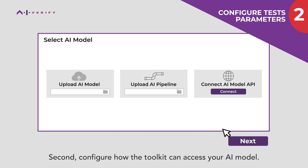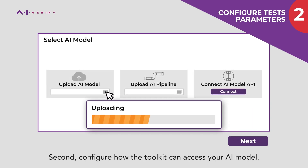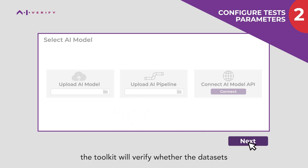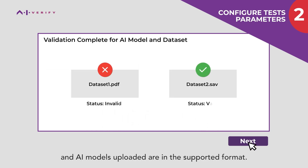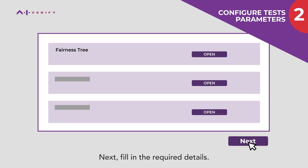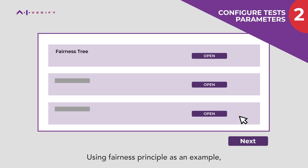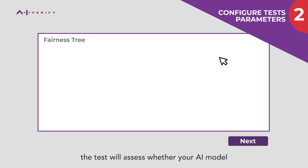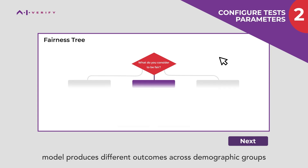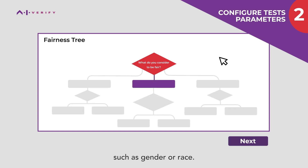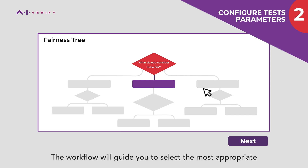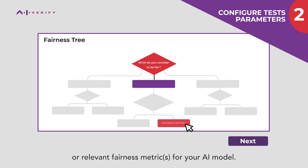Second, configure how the toolkit can access your AI model. Upon upload, the toolkit will verify whether the datasets and AI models uploaded are in the supported format. Next, fill in the required details. Using the fairness principle as an example, the test will assess whether your AI model produces different outcomes across demographic groups, such as gender or race. The workflow will guide you to select the most appropriate or relevant fairness metrics for your AI model.